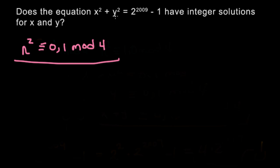So let's consider these two numbers, x² and y². x² is always going to be congruent to 0 or 1 mod 4. And y² is always going to be congruent to 0 or 1 mod 4 because this is a square of an integer.